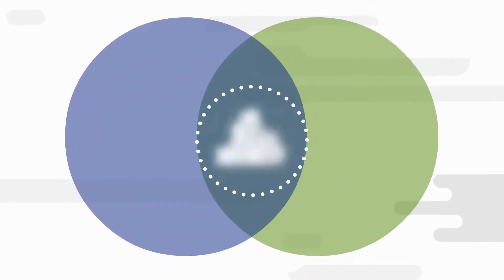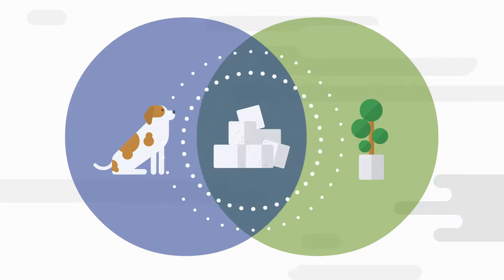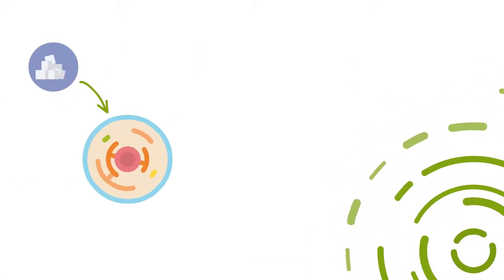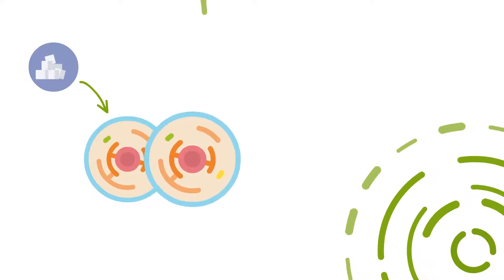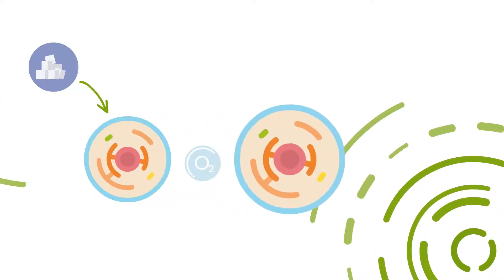Respiration breaks down sugars in the body, whether that's an animal body or a plant body. The sugars are used for energy by the cells of the body, and in order for this function to occur, oxygen is required.